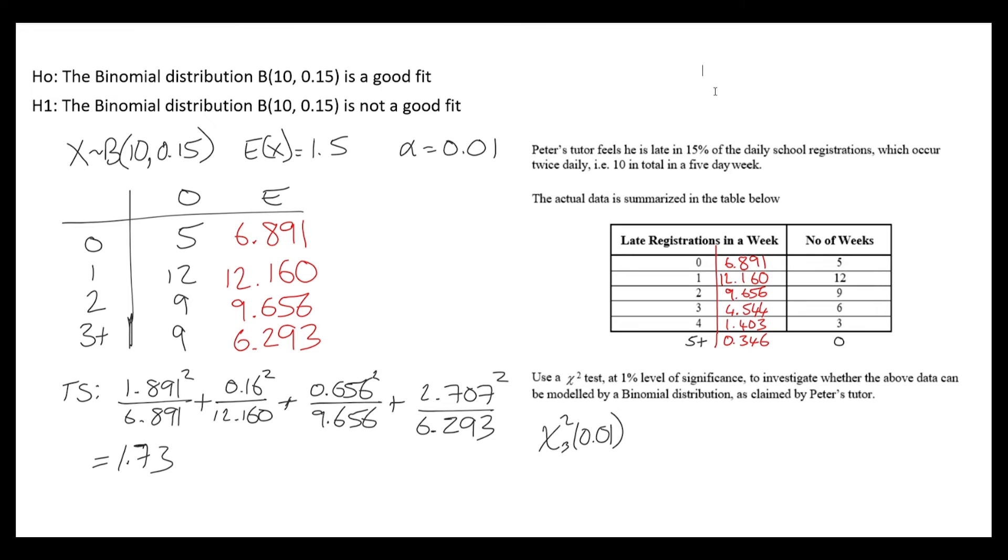Our critical value for 3 degrees of freedom - and this is 3 degrees because we had 4 rows after we combined and we subtract 1 because we know that the totals should add up to 35 - the critical value at 1% is going to be 11.345. On a diagram, the 11.345 is going to be here. Anything in the shaded region is a significant result. Our 1.73, very far away from the shaded region, it's over here. It's not a significant result. It's quite likely that we would have a test statistic like this if this was the underlying binomial distribution.